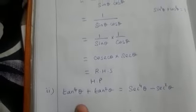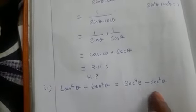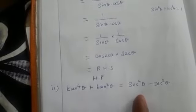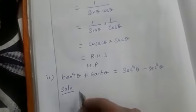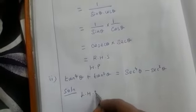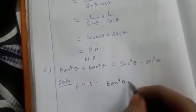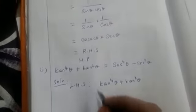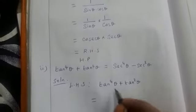Now the second sum: tan to the power 4 theta plus tan squared theta is equal to sec to the power 4 theta minus sec squared theta. Let us take the LHS, which is tan to the power 4 theta plus tan squared theta, and using that we have to bring the RHS answer.